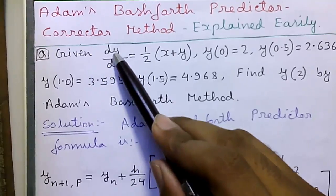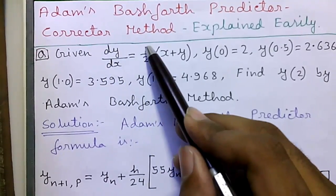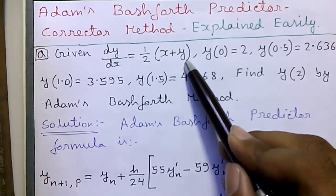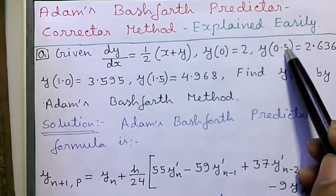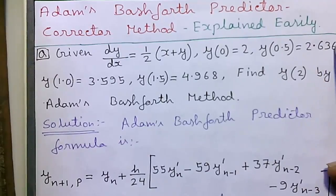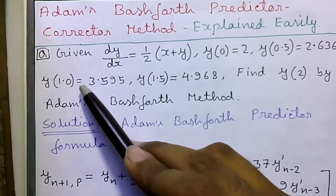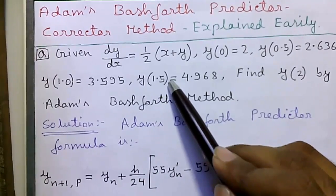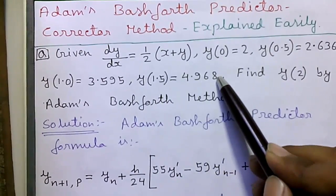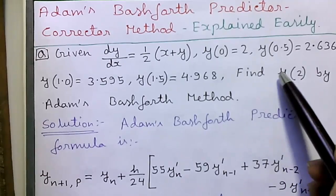Our question is given dy by dx equals to half into x plus y where y of 0 equals to 2, y of 0.5 equals to 2.636, y of 1.0 equals to 3.595 and y of 1.5 equals to 4.968.